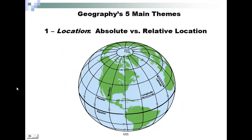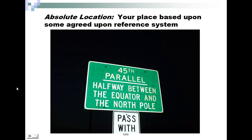GIS is the way that we can express geography and analyze the 'where' component. GIS and geography in particular have five main themes. We have location — absolute versus relative location. Absolute location is what we think about with a GPS: our latitude and longitude based on the geographic coordinate system, which we'll talk about later.